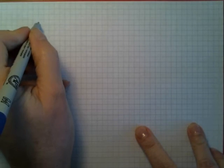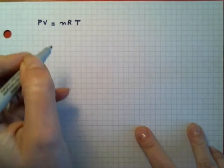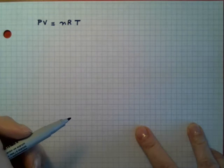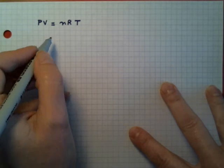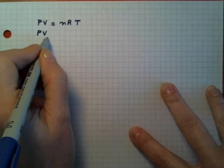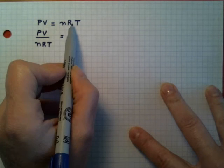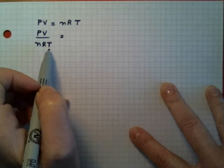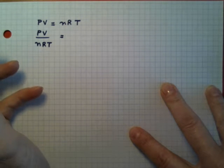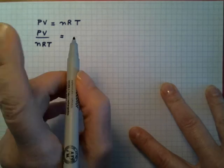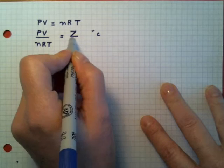We have for a perfect gas the ideal gas equation of state, which we know very well by now: PV is equal to nRT. Instead of writing it in this fashion, I want to change it a little bit and write it as PV over nRT. If I take everything over here and put it on the left side, it should equal one for a perfect gas. But instead of writing one, I'm going to write Z.